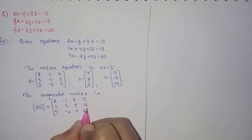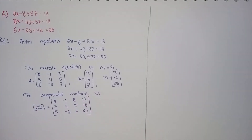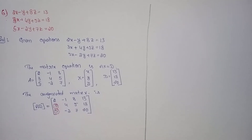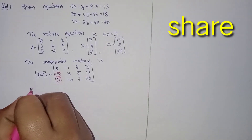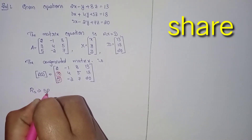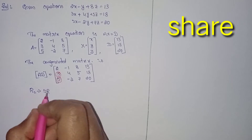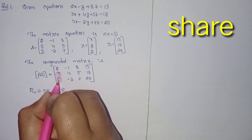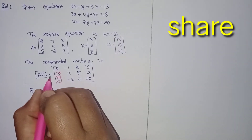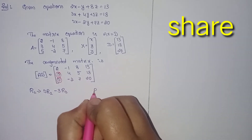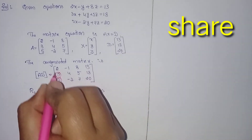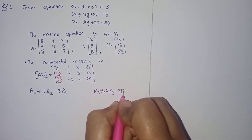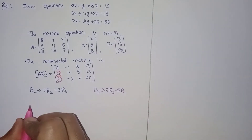Now convert these two elements into zeros. For that we will use row operations. In R2: 5 times R2 minus 3 times R3. This element multiplies for this row and this element multiplies for this row. In R3: 2 times R3 minus 5 times R1.